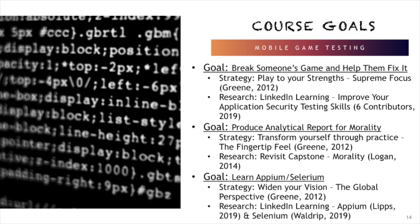In the Mobile Game Testing course, I will try to break someone's game and allow them to break mine. I'll play to my strengths in testing, drawing on skills learned in the Air Force to break things constructively before they reach production. I'll use LinkedIn Learning to improve application security testing skills, then produce an analytical report for Morality. Finally, I will learn Appium and Solarium, two testing tools for mobile gaming, using LinkedIn Learning to achieve this goal.